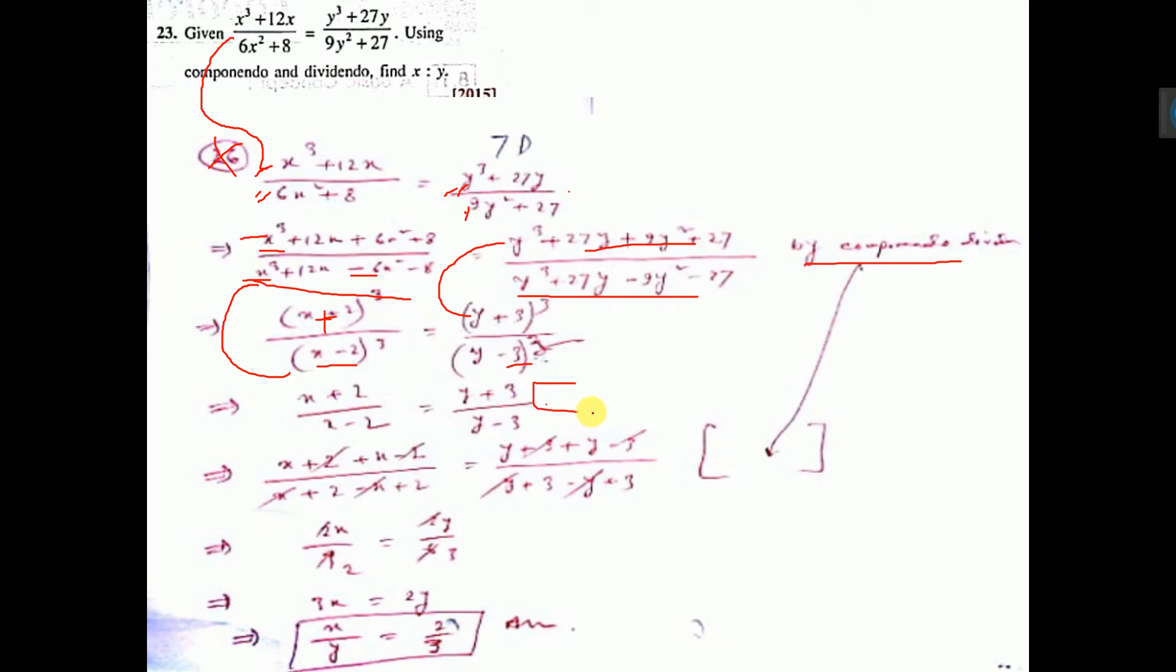Here you can write: taking cube root from both sides. Again apply componendo-dividendo. That means x plus 2 plus x minus 2 by x plus 2 minus x minus 2, similarly y plus 3 plus y minus 3 by y plus 3 minus y minus 3.